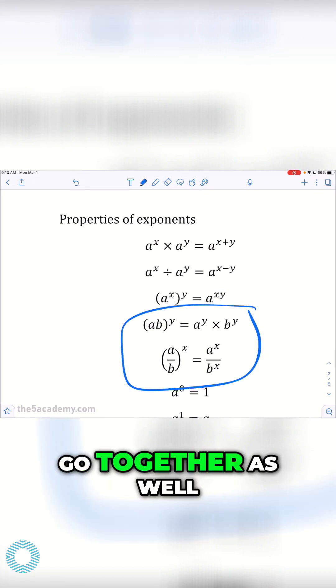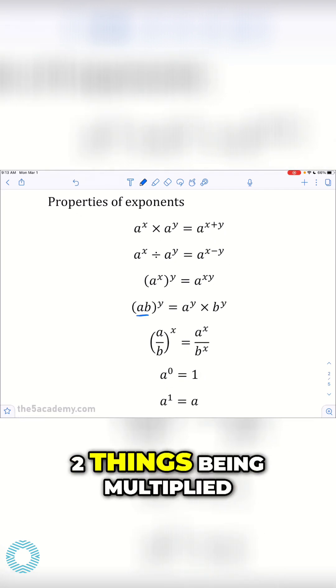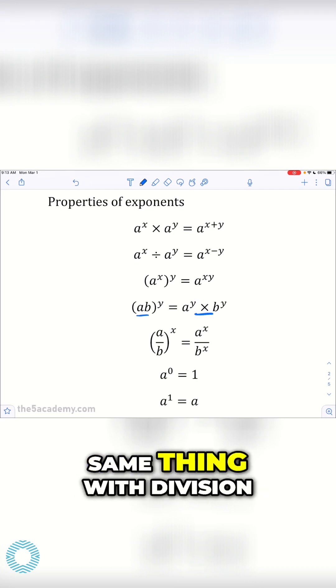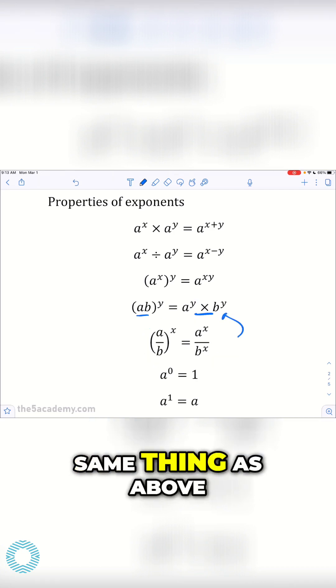These two kind of go together as well. So when you have two things being multiplied together and raised to an exponent, you can actually split it by just distributing the exponent to each thing. Same thing with division. This is really the same thing as above.